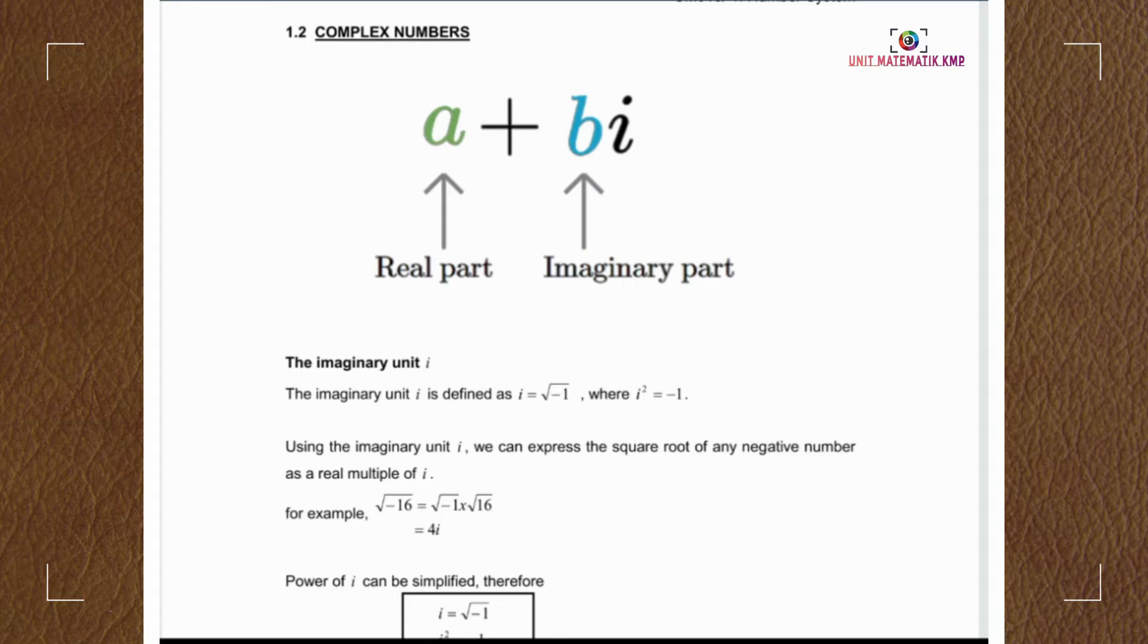The imaginary unit i is defined as i equals the square root of negative 1, where i squared is negative 1.